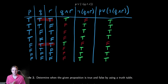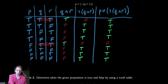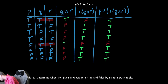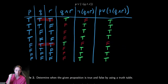The question asks to determine when the expression is true and false. It is true unless P is false and Q and R are both true. So the only instance in which this is false is the row where we have false, true, true for P, Q, and R respectively.